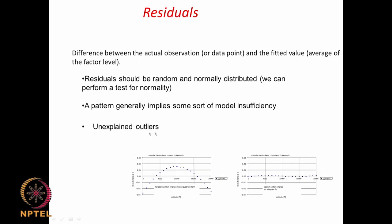You should also watch for unexplained outliers. If you have 10 data points and 9 residuals are reasonably small while one is extremely large, there is obviously a problem — you need to look carefully at that data point. Such a point is called an unexplained outlier.